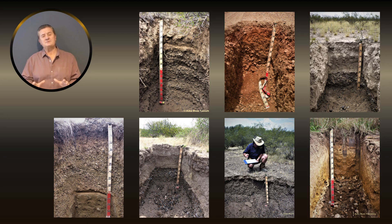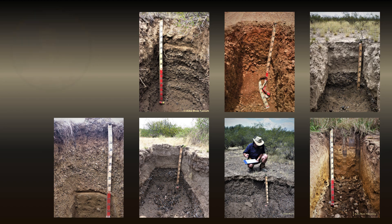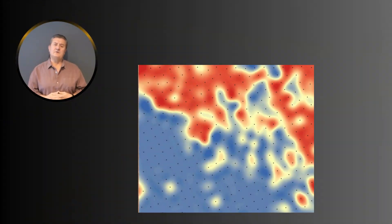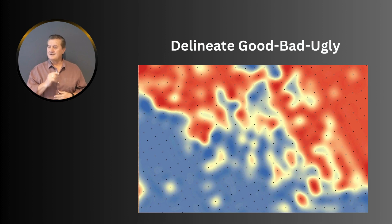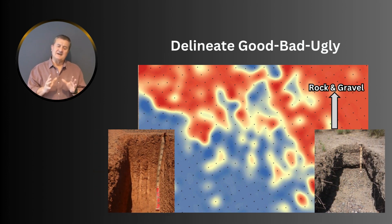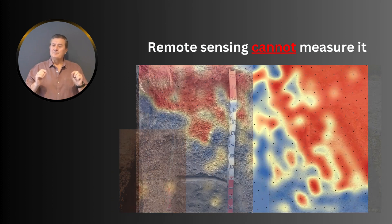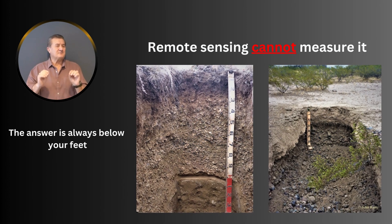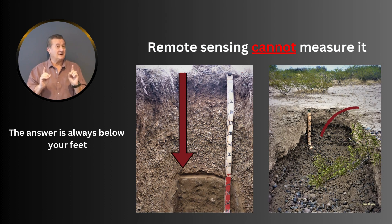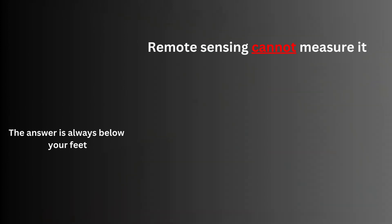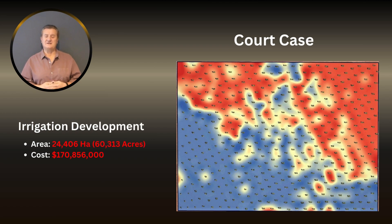This knowledge is important for land use planning and management, and that applies equally to dry land farming and irrigated agriculture. It is therefore very important to accurately delineate such areas on soil maps. But in order to do that, you have to dig soil pits, because whatever you're looking for on the surface, remember the answer is always below your feet. Let me show you one practical example.